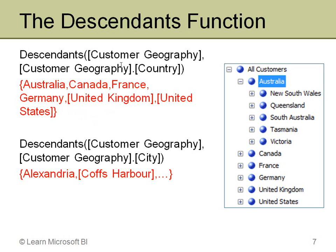Now I run the same query but specify the city level instead of country. This passes country and state-province and returns all of the cities regardless of the country or state-province in which they are located — just all cities.